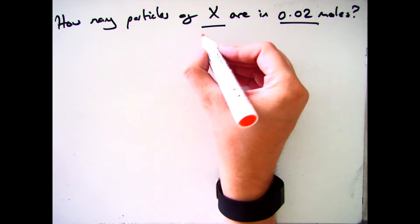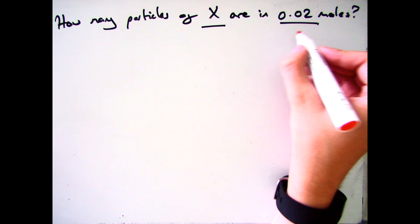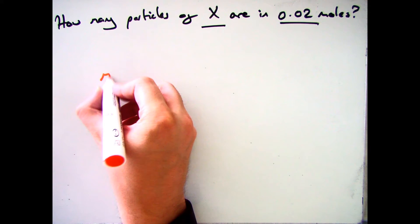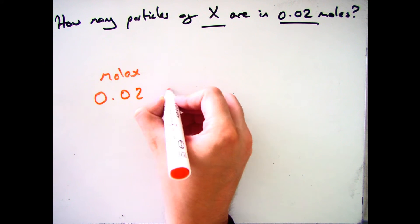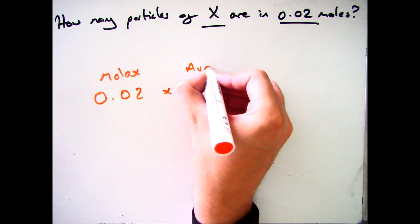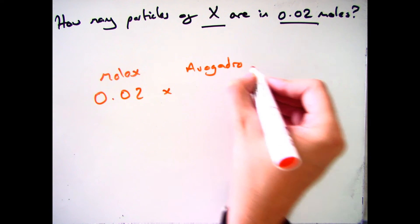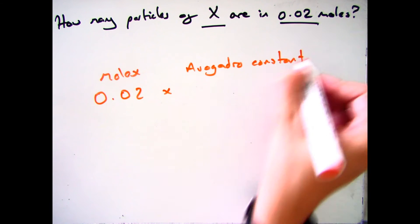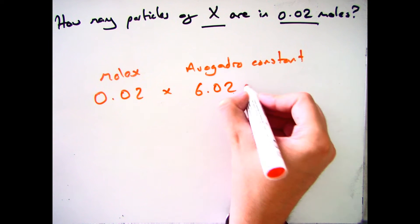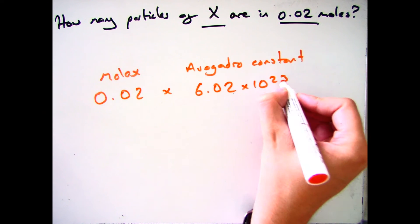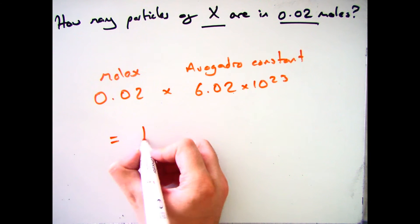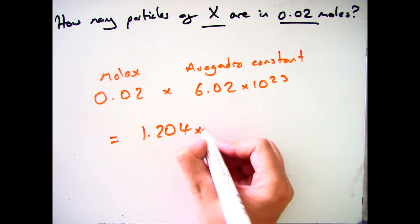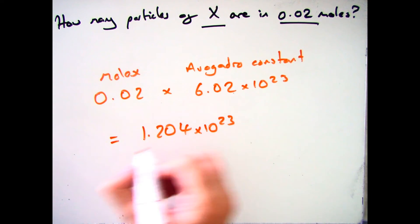Looking at another example: how many particles of X are in 0.02 moles? The equation is exactly the same. You take the number of moles, 0.02, and multiply it by Avogadro's constant, 6.02 × 10²³. Put that into your scientific calculator and it comes out as 1.204 × 10²³.